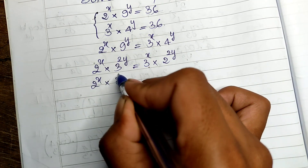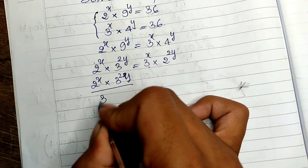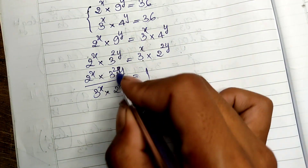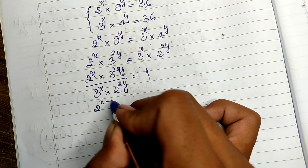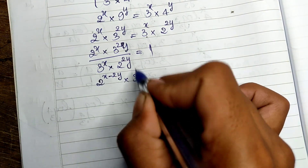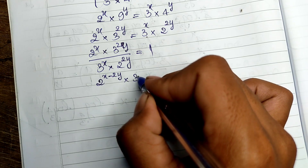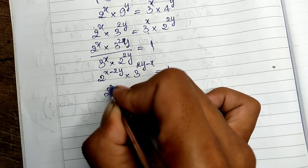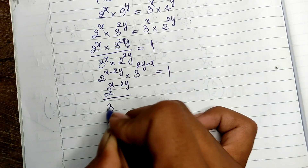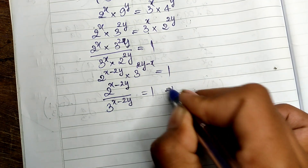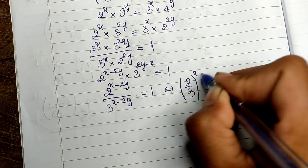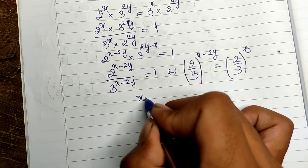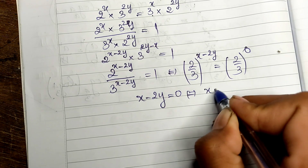Dividing both sides, we get 2^x times 3^(2y) divided by 3^x times 2^(2y) equals 1. This simplifies to 2^(x minus 2y) times 3^(2y minus x) equals 1, which gives us (2/3)^(x minus 2y) equals (2/3)^0. Therefore x minus 2y equals 0, so x equals 2y.